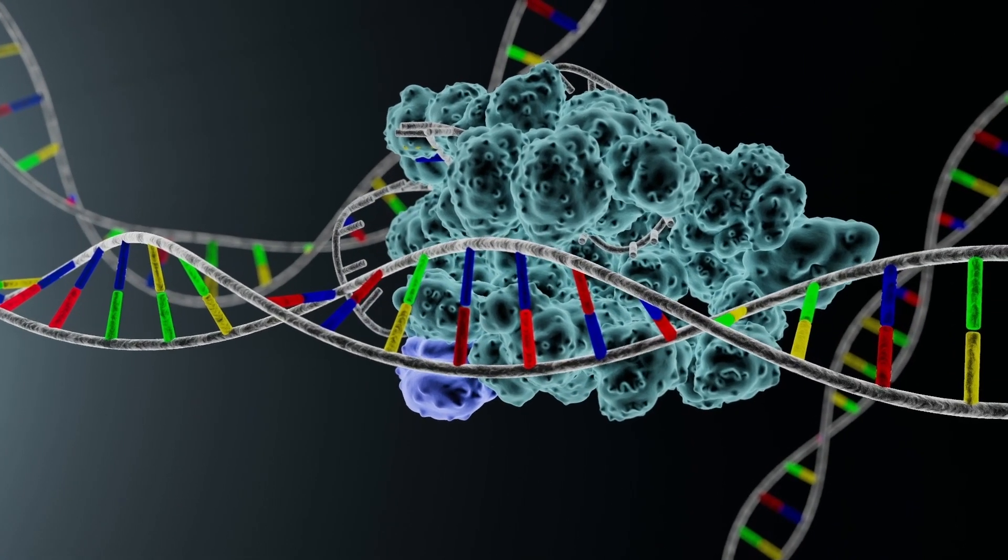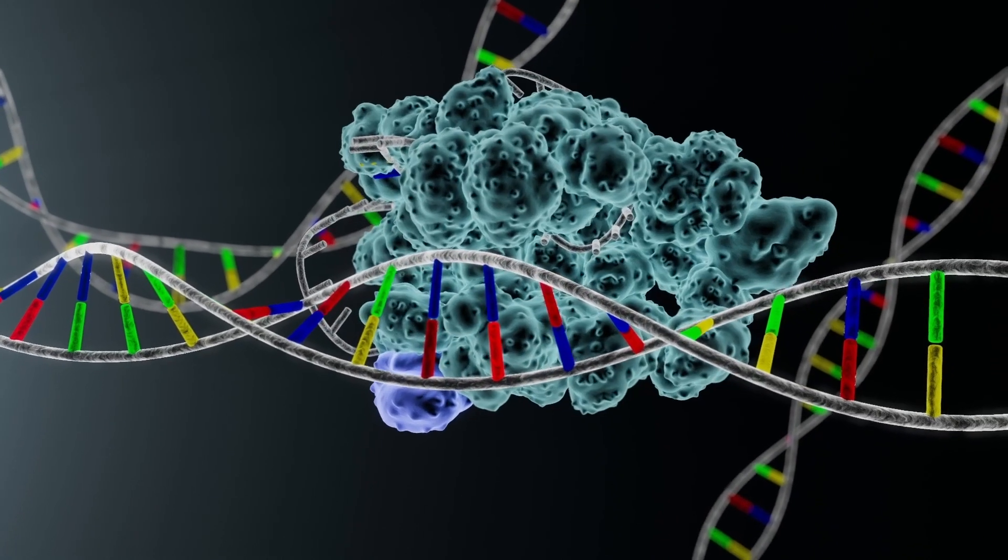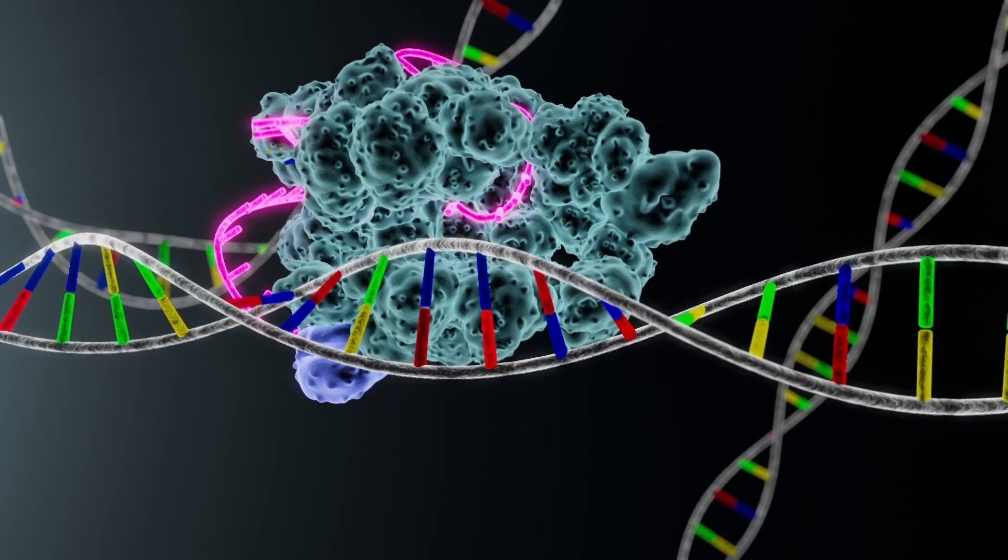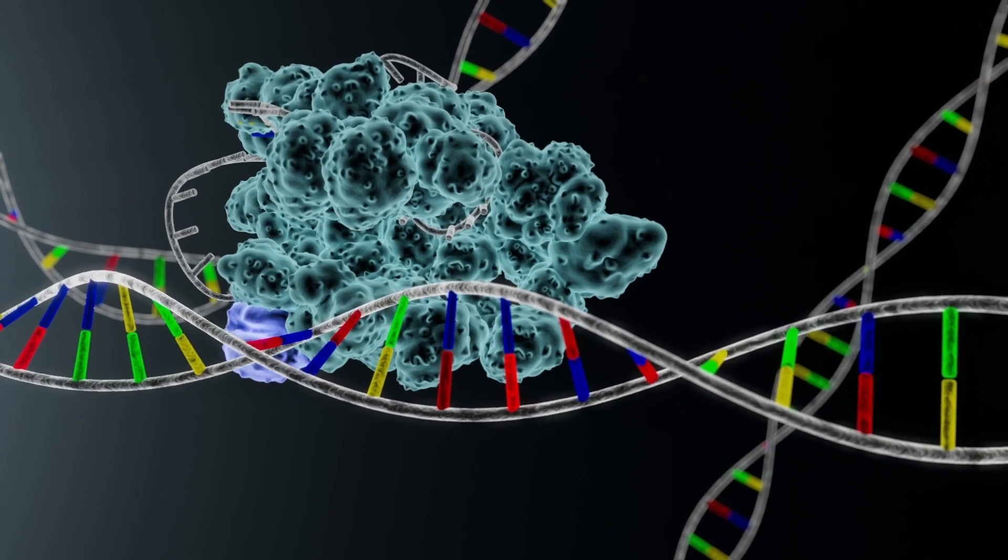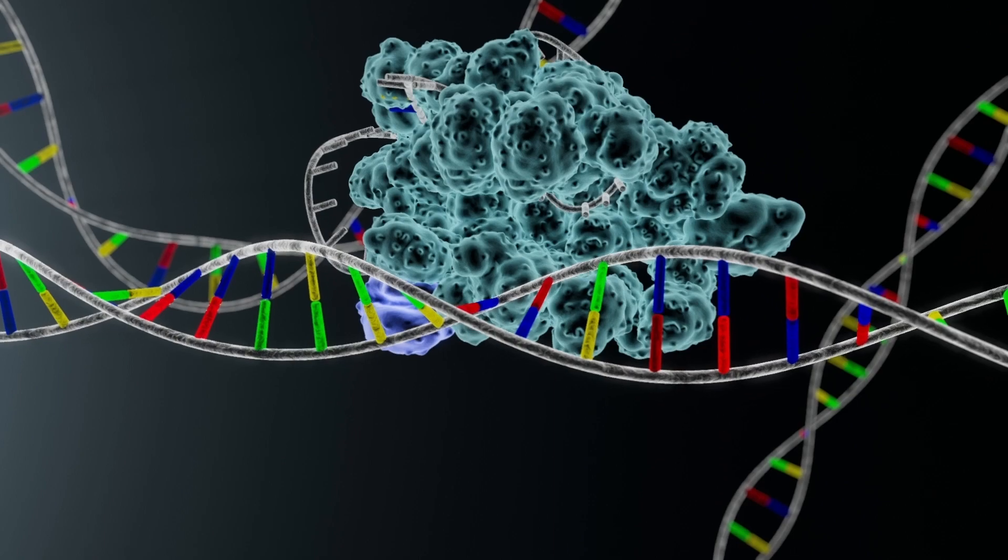Base editors consist of two components joined together: a CRISPR-Cas9 protein bound to a guide RNA, which identifies features of a target DNA sequence, and a base-converting enzyme, which carries out the desired edit to the target base.